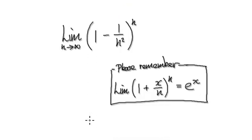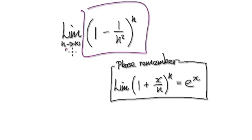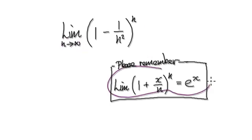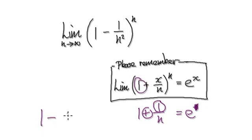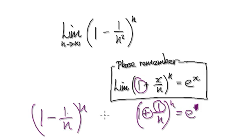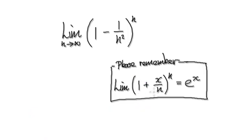Next question: find the limit of this sequence as n tends to infinity. So if you have (1 + 1/n) to the power of n, this is positive 1, so it's e to the positive 1, which is 1. If you have (1 − 1/n) to the power of n, this is e to the negative 1. Try and ingrain this in your mind. Find the limit of this sequence as n tends to infinity — press pause and have a go.